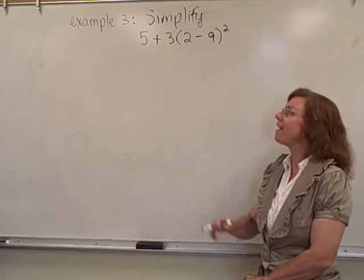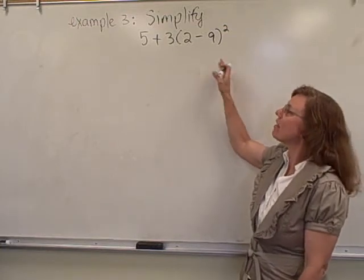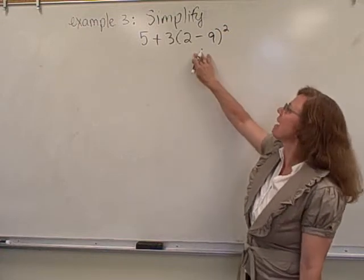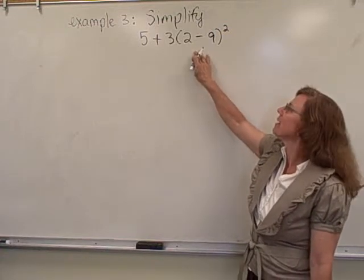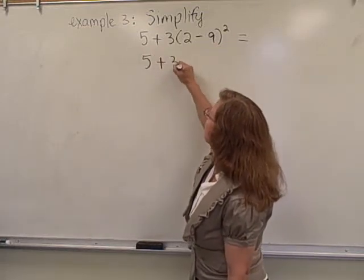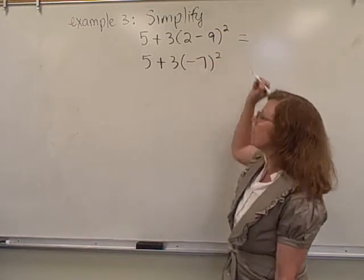We're going to simplify this expression following the order of operations. And so, first step is always inside grouping symbols. So we just have this one set of parentheses here, so we do 2 minus 9, and so I will have 5 plus 3 times 2 minus 9, negative 7, squared.